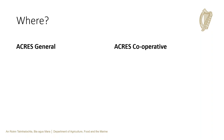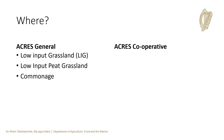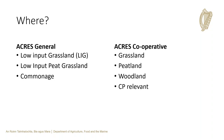Results-based elements will take place under both ACRES General and ACRES Cooperative. In ACRES General, there are three elements that will use results-based scoring: low-input grassland, low-input peat grassland, and commonage. In the cooperative regions, all habitats would be scored using the appropriate scorecard — be that grassland, peatland, or woodland — or where the cooperation project team deems it relevant, additional scorecards may be implemented. Commonage will also be scored under the ACRES Cooperative region.